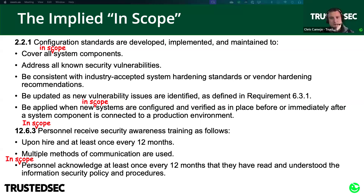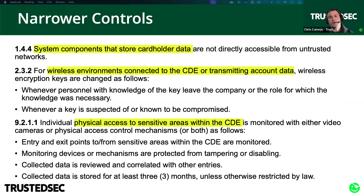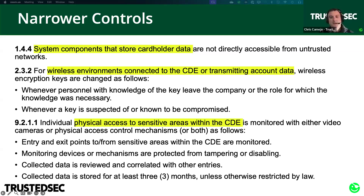PCI itself has narrowed down some requirements further, with some controls being more explicit about their scope — referencing components that store cardholder data, wireless environments that connect to the CDE or transmit account data, or physical access to sensitive areas within the CDE. It's important to read these requirements very closely and look for these terms, understanding that certain requirements only apply to subsets of the in-scope environment. That reduces your compliance burden.